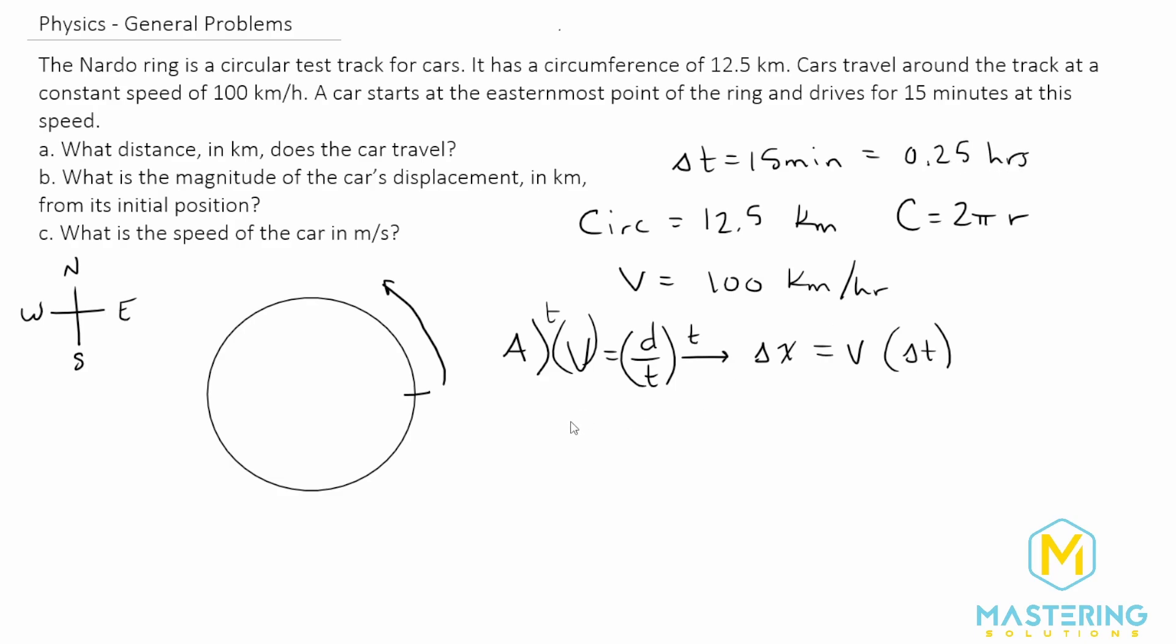So now we can plug this in. Delta x is equal to the velocity, which is 100 kilometers per hour, and we'll multiply that by the time, which is 0.25 hours. So now the hours are going to cancel, and we'll be left with kilometers. And 100 times a quarter is a quarter of 100, or 25 kilometers. And that is for part A.